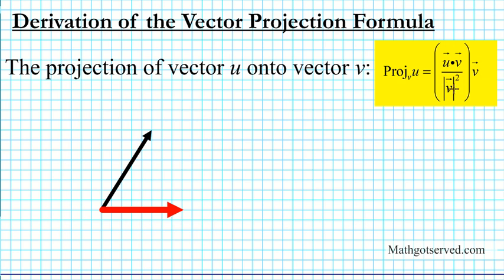It's like a scalar multiple of a vector. In order to give you the geometric understanding of what we're about to prove, or the meaning of the projection of two vectors — of a vector onto another — I'm going to use this vector diagram to illustrate the visual representation of the projection of vectors.